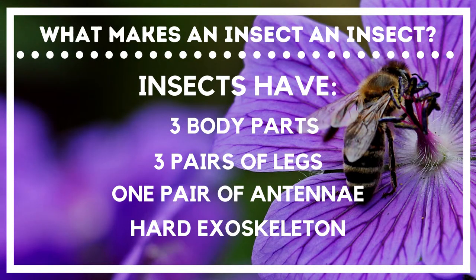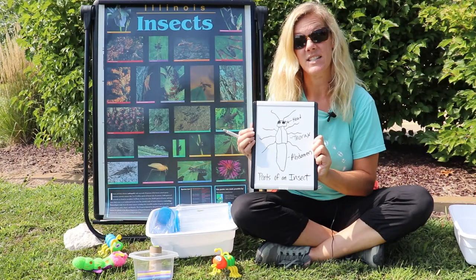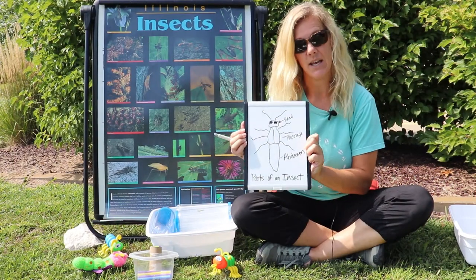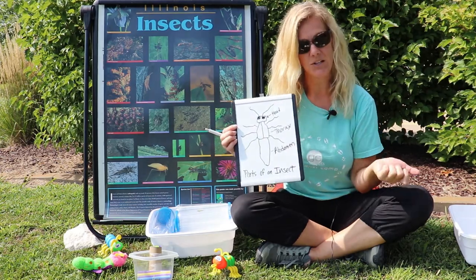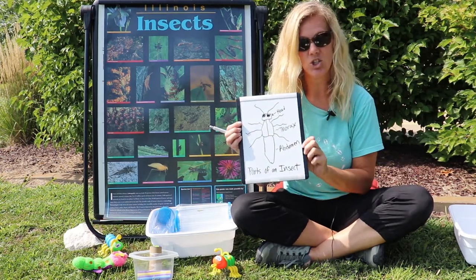Insects have three pairs of legs and also a pair of antennae — that's one thing that sets them apart from other animals. On the outer part of an insect there is an exoskeleton, and sometimes that exoskeleton is shed.